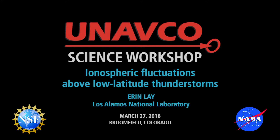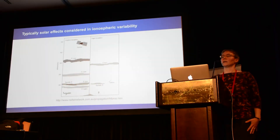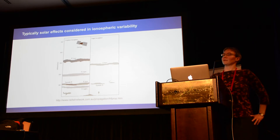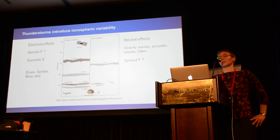In the past, scientific works have mostly studied how solar radiation impacts variability in the ionosphere — solar storms and geomagnetic activity — which is a major factor on a large scale. Instead, I'll talk about something people have started looking into in the past ten years or so: the impact of events below the ionosphere, specifically in the troposphere, like thunderstorms, earthquakes, and tsunamis, and how those can impact the ionosphere.